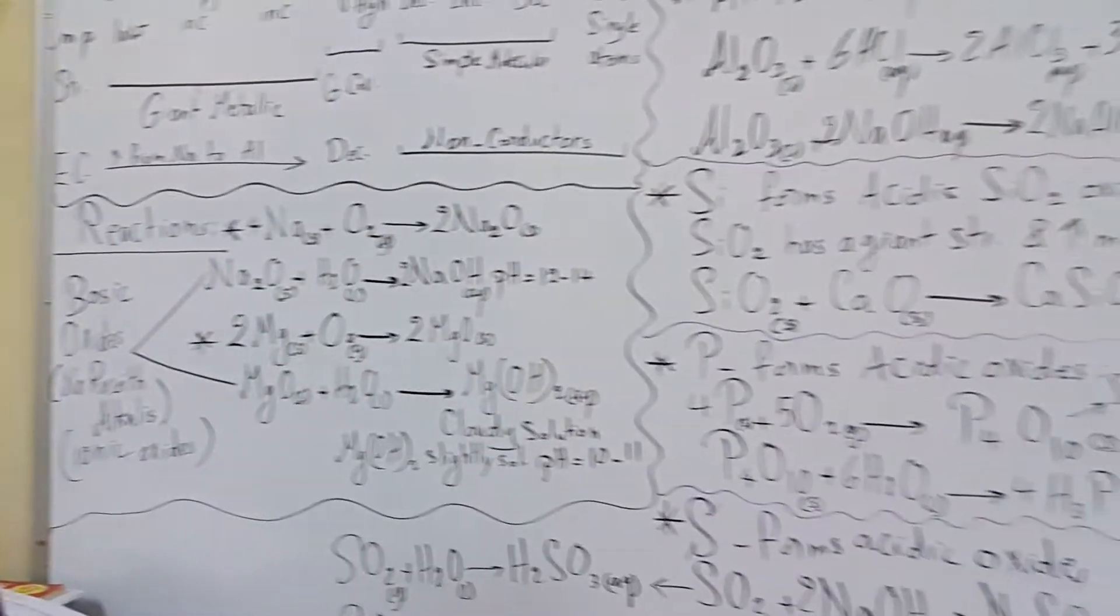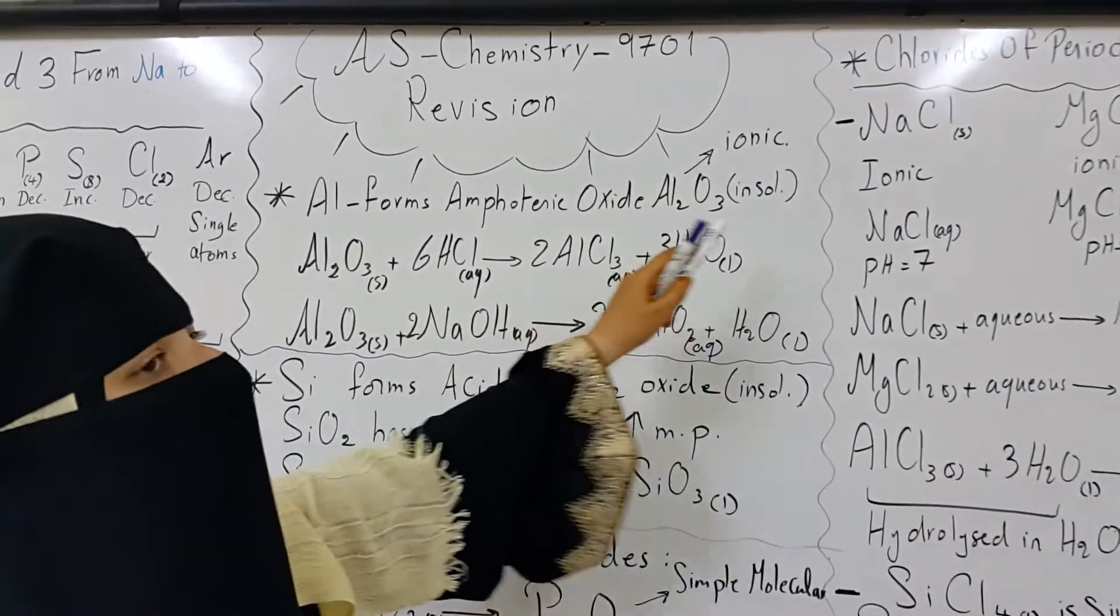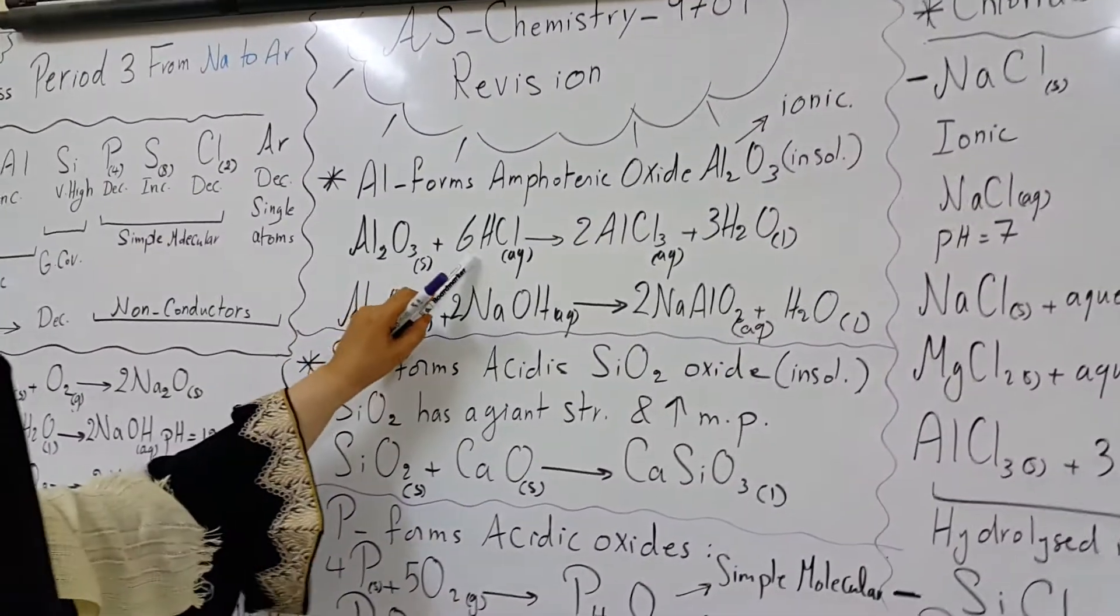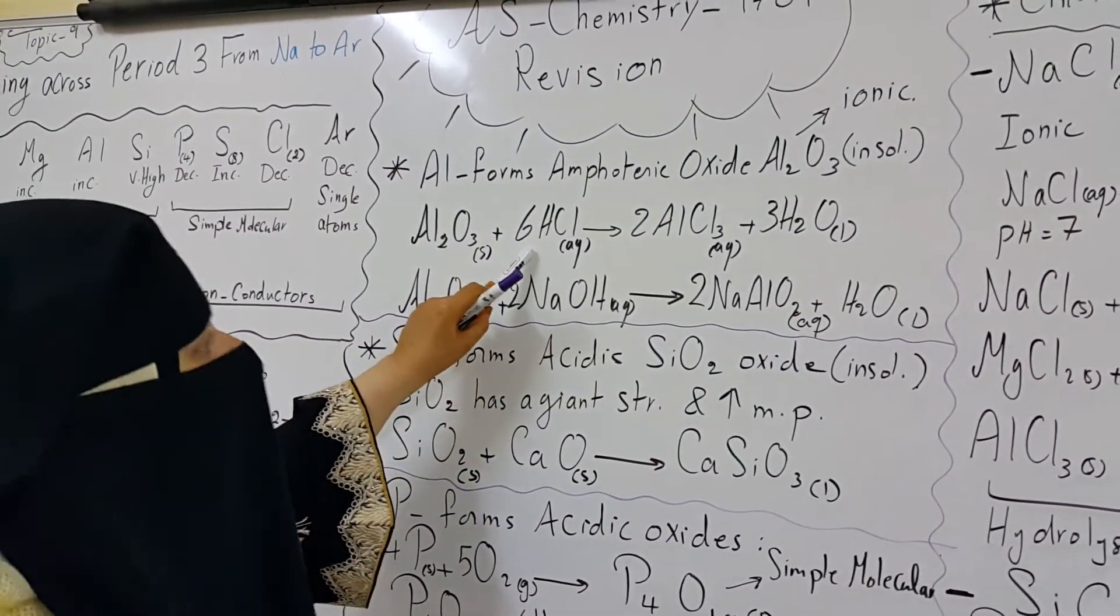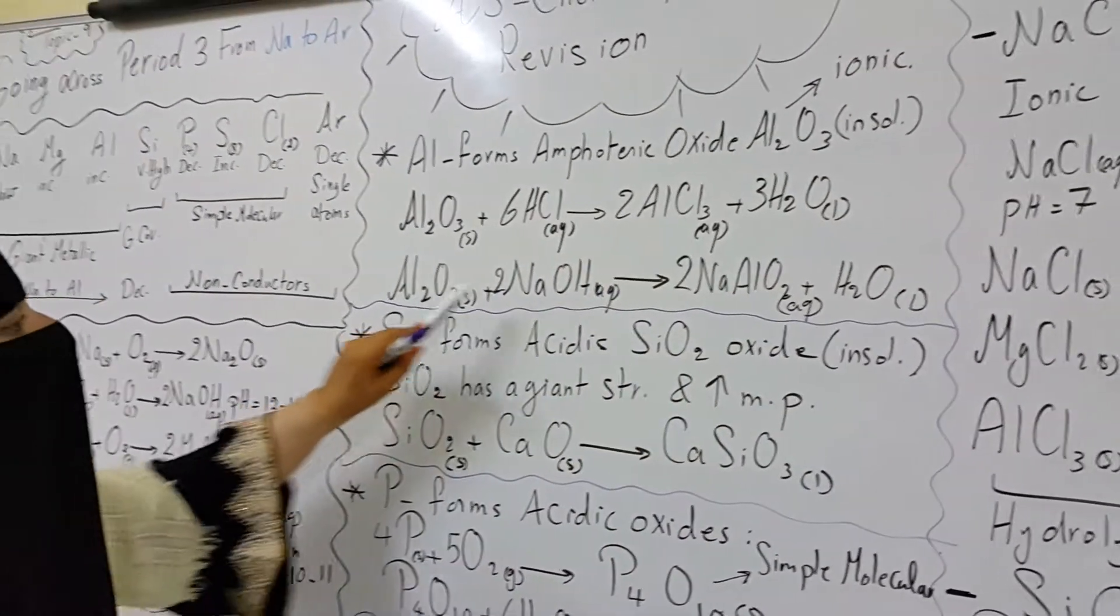Now let's proceed to alumina. Alumina forms an amphoteric oxide, alumina oxide which is insoluble in water and it has ionic structure. Alumina oxide reacts with hydrochloric acid and other acids to form salt plus water.